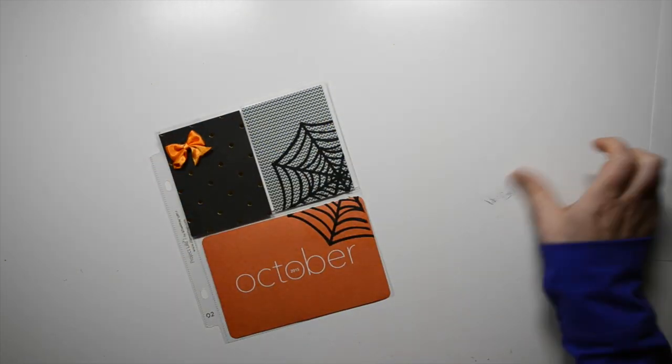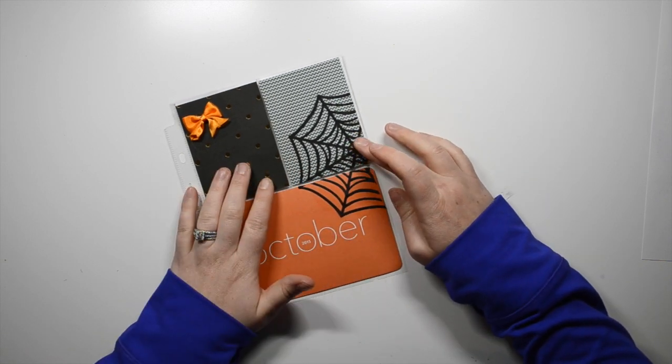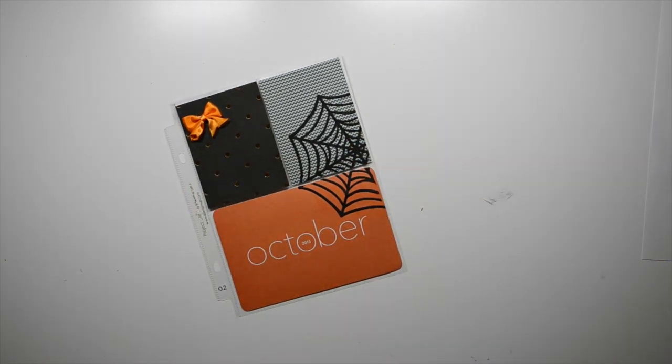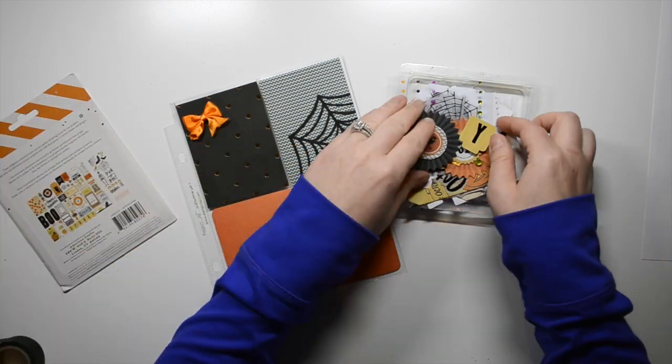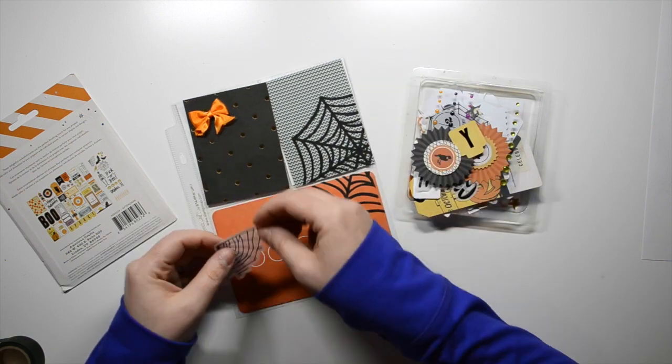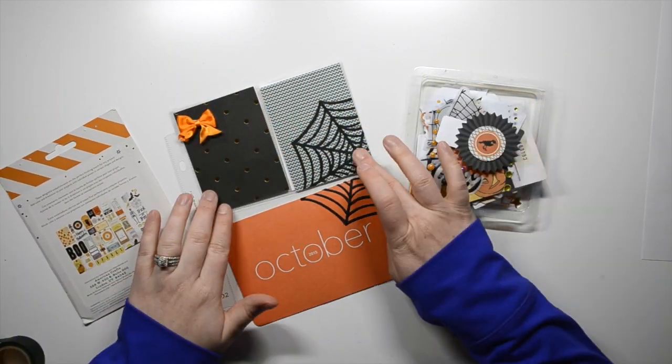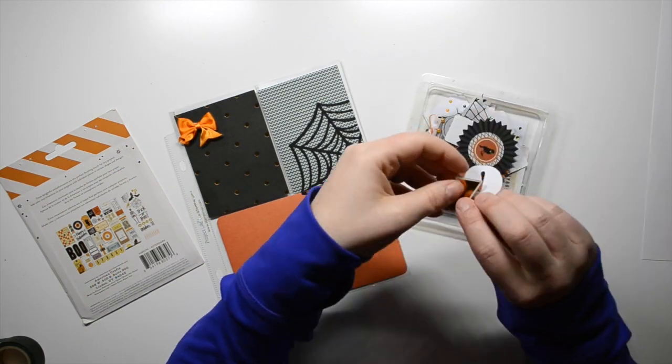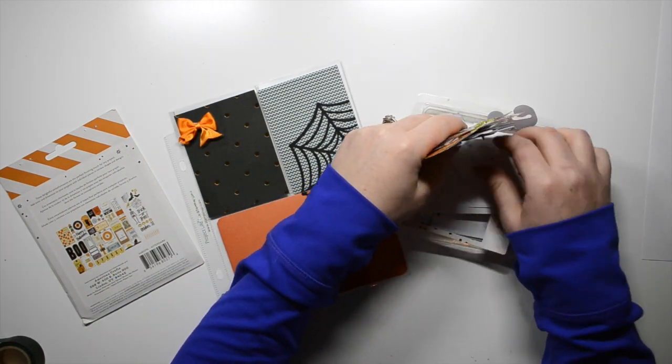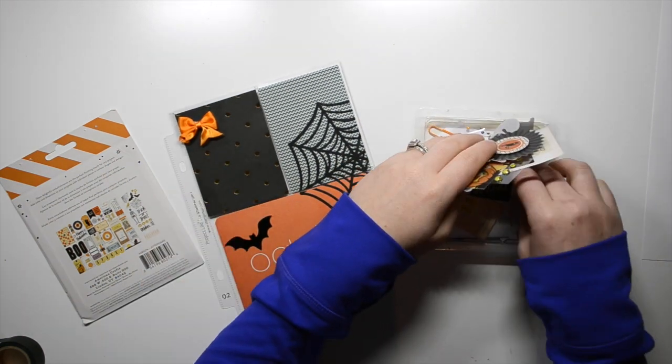And then I trimmed down a 12x12 specialty paper from Crate Paper. That's the black with gold foiled polka dots. I trimmed that down to make a 3x4 card. The other card that I trimmed down is like almost a blue chevron, and I really like the blue in this collection. So I wanted to bring in the blue and the black and the orange.